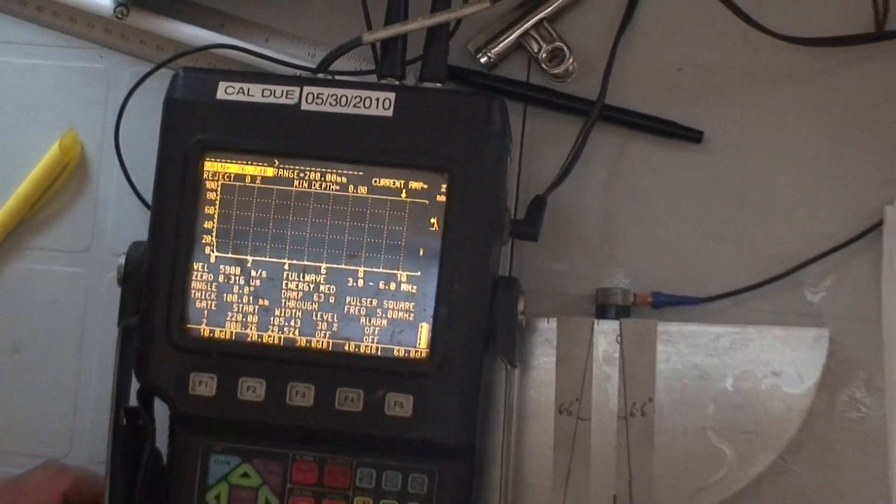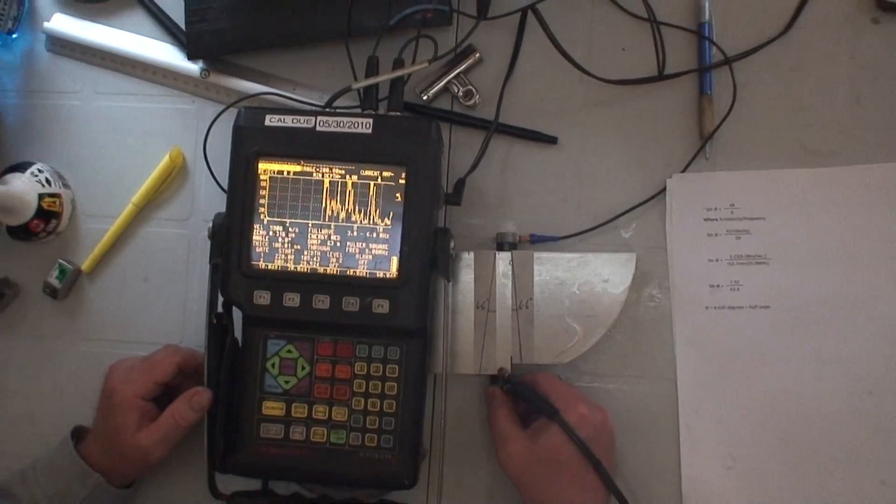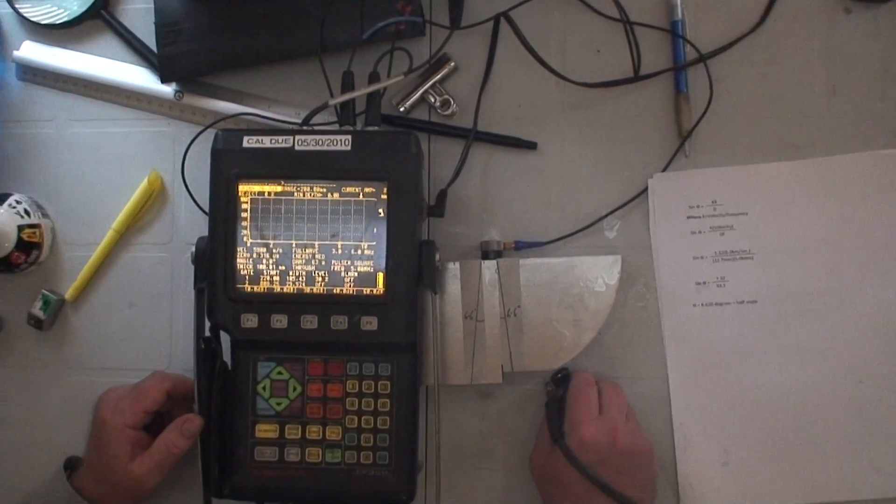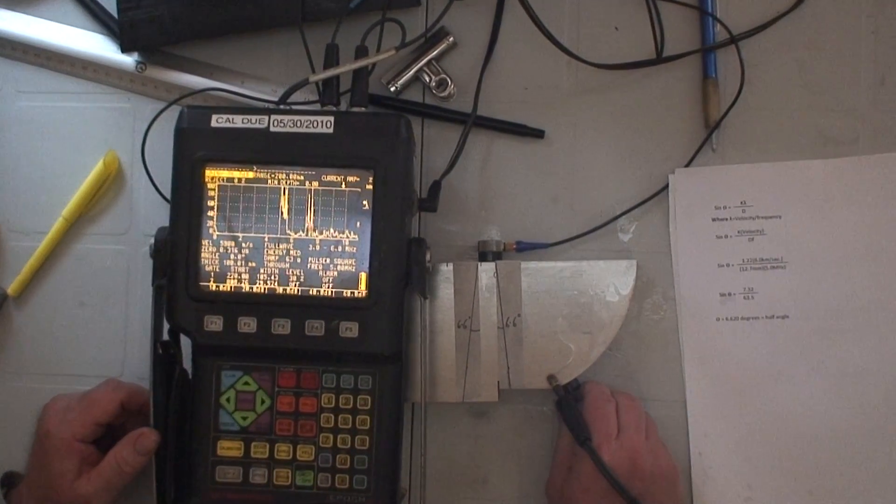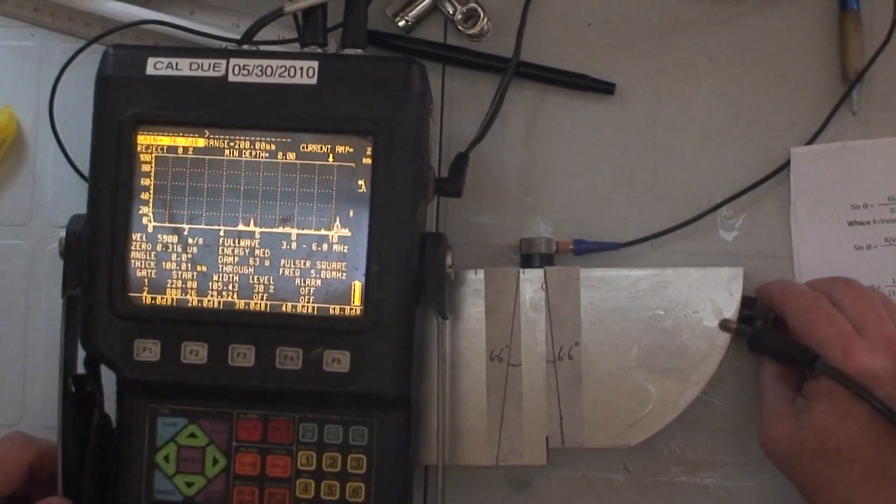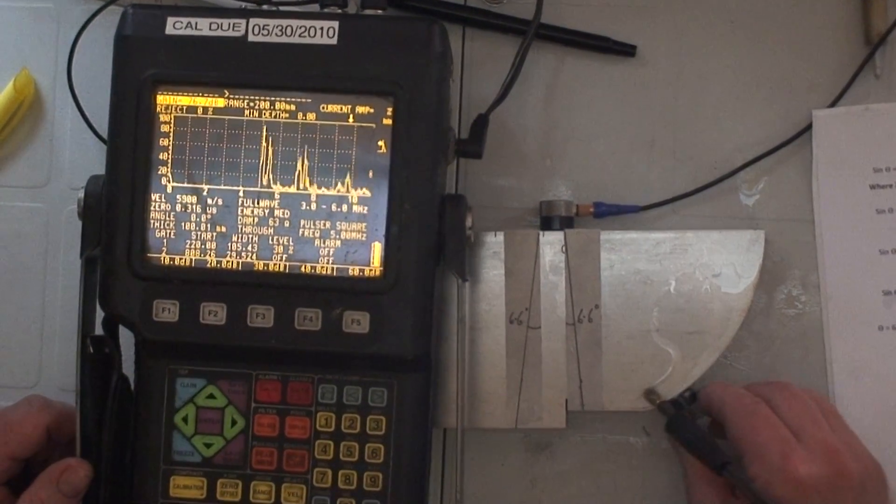I place the probe through transmission. It picks up. I place the probe where there should be no sound and I can still see the sound right the way to the top.